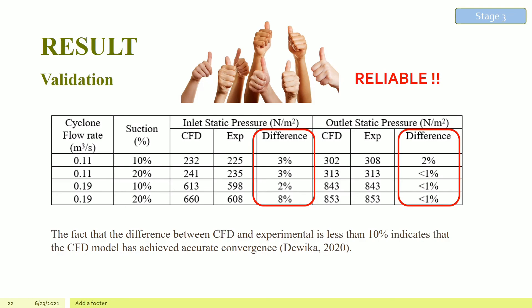Before using CFD results for additional data acquisition and analysis, validation of CFD against experimental data must be done to ensure accuracy. Despite the variable percentage of suction, the static pressure difference at the outlet between experimental data and CFD data is less than 2% for all cyclone volumetric air flow rates. The static pressure difference at the inlet was only 8%, the highest deviation, observed at a cyclone flow rate of 0.19 m³/s. The difference between CFD and experimental data being less than 10% indicates that the CFD model has achieved accurate convergence.